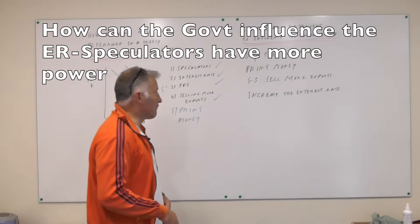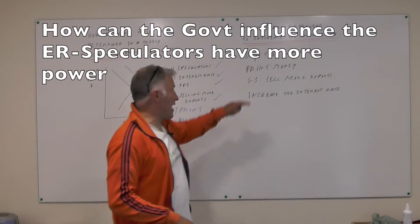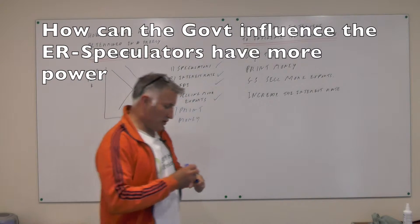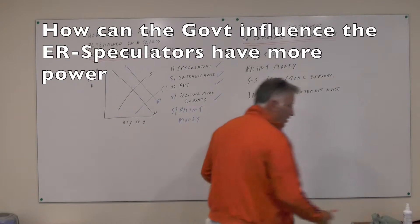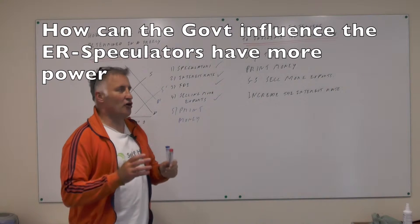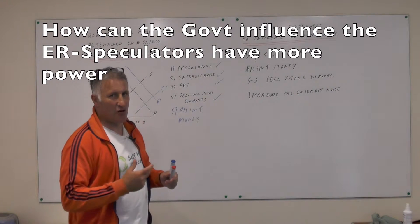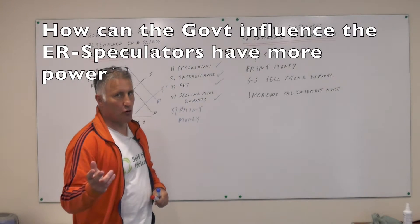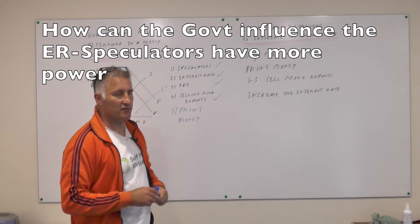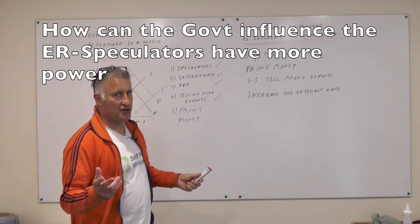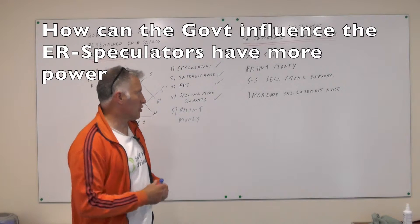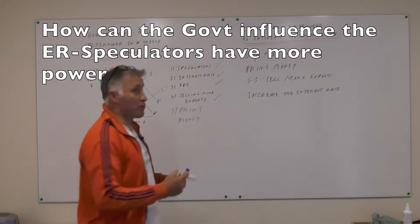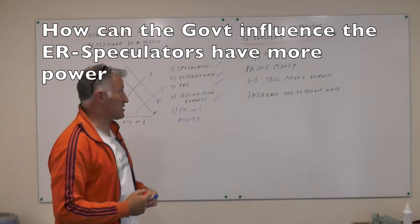How can the government influence the exchange rate? It can go out and buy some of your currency to increase it, although these days our governments do not have as much money as the speculators, so it's probably not going to have a very big impact. And ever since Gordon Brown sold all our gold at $250 an ounce when they're now worth $1,300 an ounce, we haven't got a lot of money left. If you wanted to print money, that would reduce the exchange rate.